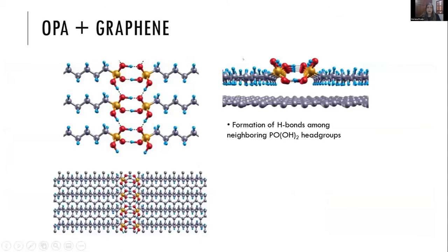We performed ab-initio calculations to understand our system better. We considered many geometries for the molecule and substrate. This is the most stable one we found. The neighbor molecules form hydrogen bonds between the head groups, and their alkyl chains lie parallel to the substrate in graphene's zigzag direction.